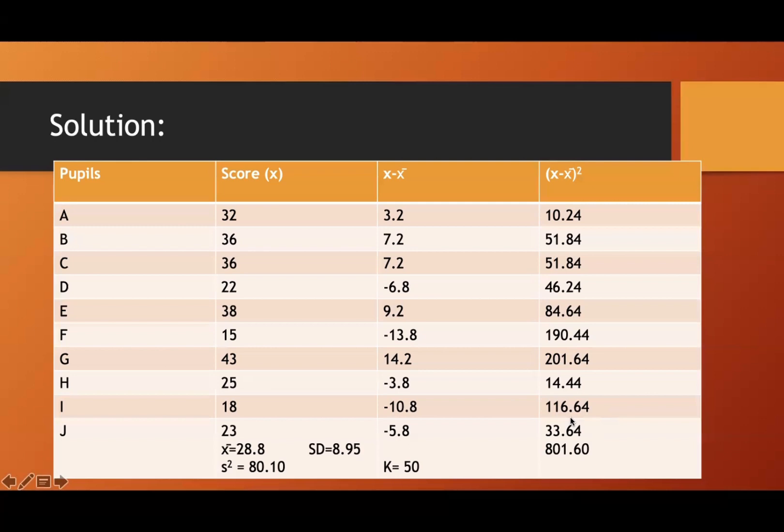So you have there 801.60, the sum of the X minus the mean squared, divided by 10, you have 80.16. So when you get the square root, that is 8.95.